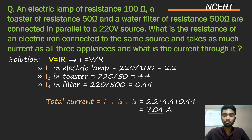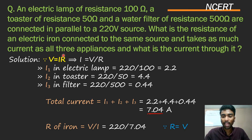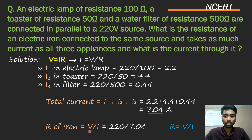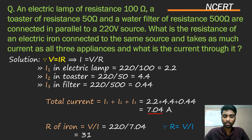Doosra answer ke liye electric iron ka resistance nikalte hain. Ohm's law lagaenge: resistance of iron = V by I. V = 220, aur current = 7.04 ampere jo humne abhi nikala. 220 divided by 7.04 = 31.24 ohm. So resistance of iron is 31.24 ohm.